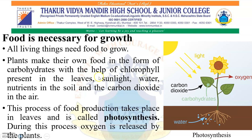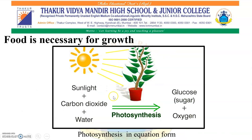This process of food production takes place in the leaves of the plant and is called photosynthesis. During this process, oxygen gas is released by the plants. The process of photosynthesis is shown here with the help of an equation: sunlight, carbon dioxide, and water are used by the plant, and the outcome is glucose — carbohydrates — plus oxygen that is released by the plants.